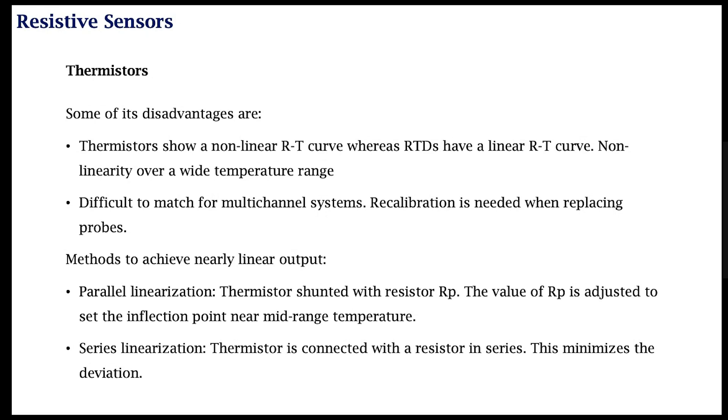They work well only within a relatively small range. Another approach to achieve linearity or nearly linear output is to use parallel linearization by using a parallel resistor, shunting it with a shunt resistor. This value of Rp is then adjusted to set the inflection point at the mid-range temperature.